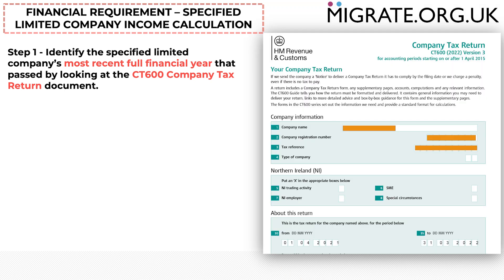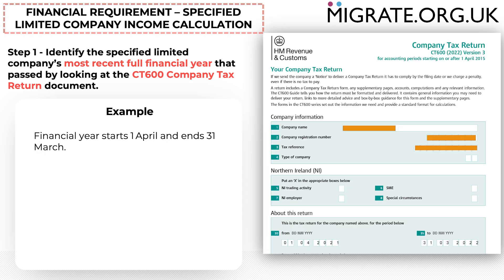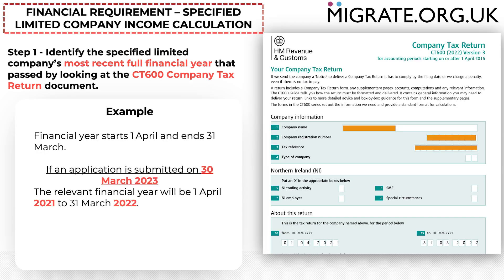To calculate the amount of specified limited company income that you can include towards the financial requirement, you must first identify the specified limited company's most recent full financial year that passed. The company's financial year can be found by looking at the CT600 company tax return document. Here is a CT600 example — we can see that the financial year starts on the 1st of April and ends on the 31st of March. So if an application is submitted on the 30th of March 2023 — one day before the financial year ends — the relevant financial year will start on 1st April 2021 and end on 31st March 2022.